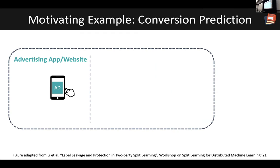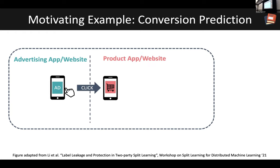A concrete example of such distributed data where privacy is important arises in the world of online advertising, in something called the conversion prediction task. Say you're an advertising company who makes money by showing ads to your users. When a user on your platform clicks on an ad, the user is taken to a product website where they can either decide to purchase the product or not.